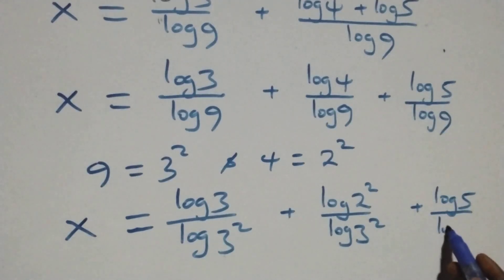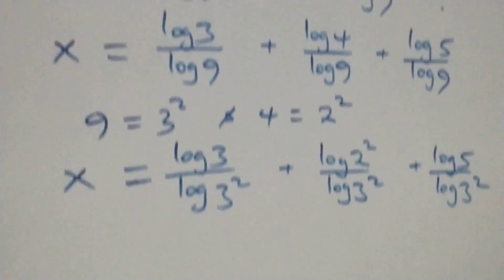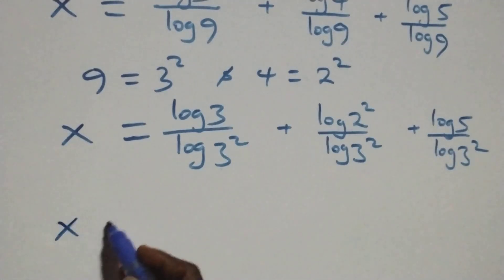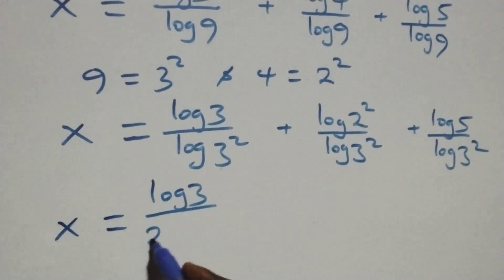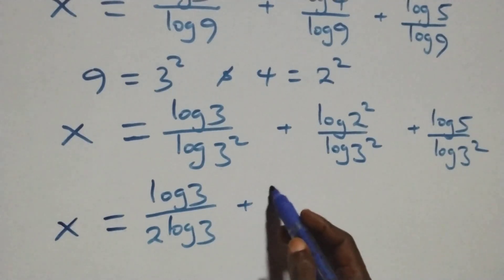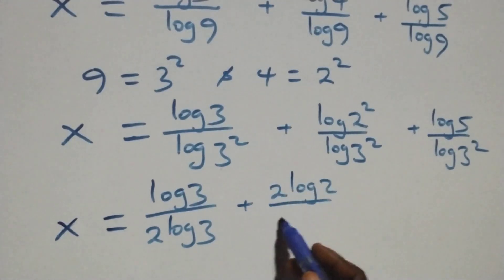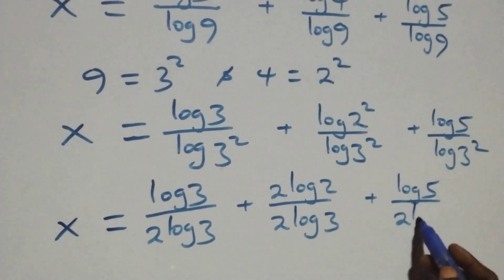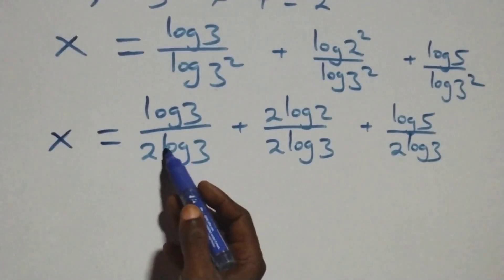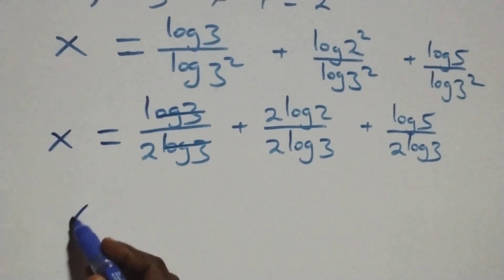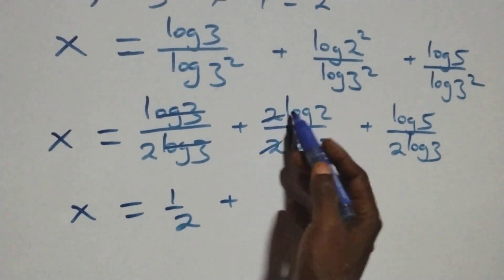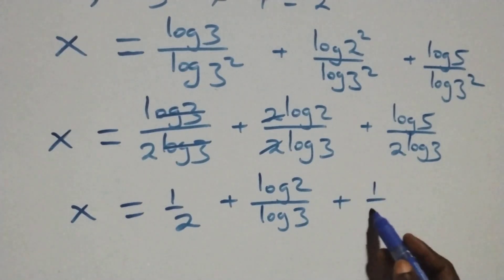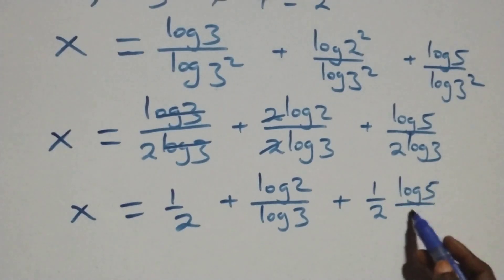We apply the power rule of logarithms, bringing the 2 down from each exponent. This gives x equals log 3 over 2·log 3, plus 2·log 2 over 2·log 3, plus log 5 over 2·log 3. Simplifying: log 3 cancels in the first term giving 1/2; the 2s cancel in the second term giving log 2 over log 3; and the third term is (1/2)·log 5 over log 3.